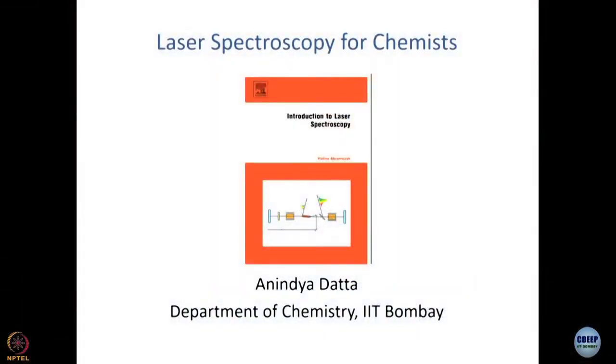Lasers are monochromatic. Later on, when we talk about ultrafast processes, we are going to say that lasers may not always be as monochromatic as we think, but some element of color will always be there. So monochromaticity is a property. Lasers are also intense — I can see this green light even though so many lights are on in this room. So, intensity is another property.